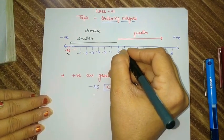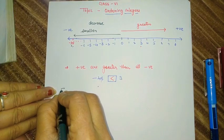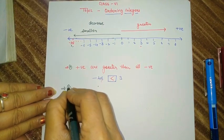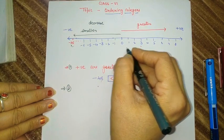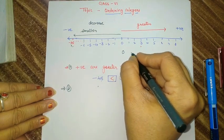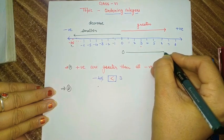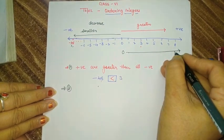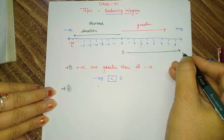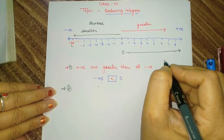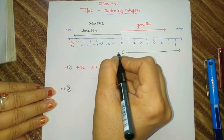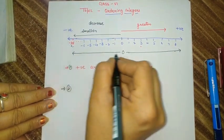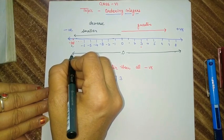One more thing to remember: if any number from 0 shifts to the right side, as soon as it is far from 0, its value increases and that number will be a greater number. It is the opposite toward the left side — if a number is far from 0 in that direction, that value decreases.